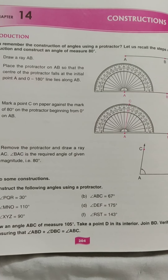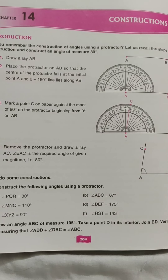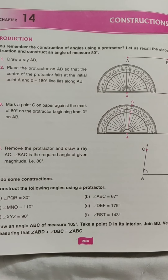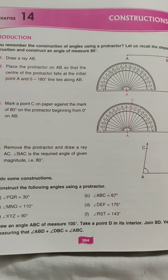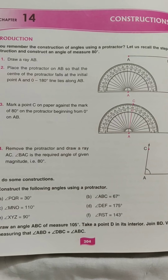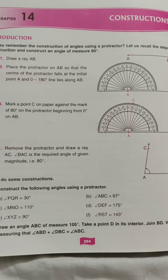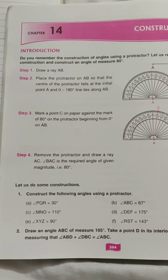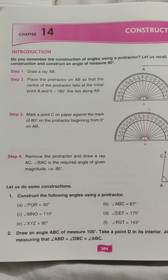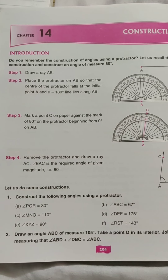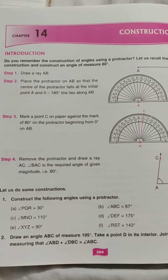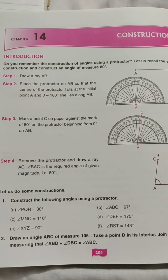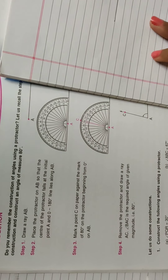Good morning dear students. Today we will start a new chapter — Chapter 14: Constructions. Constructions means where we have to draw certain figures using our compass, scale, protractor and other instruments. We have to draw some objects and figures using these instruments. We have already done similar work in classes 4 and 5, so we will use the same method here.